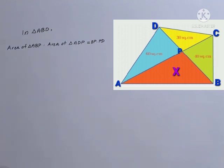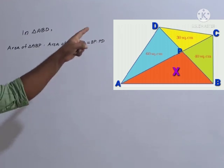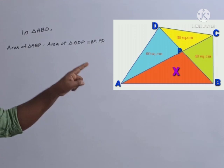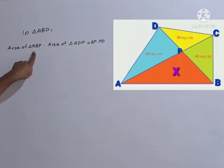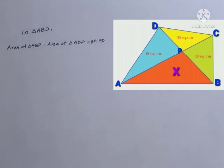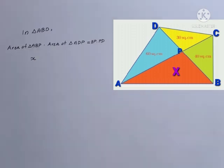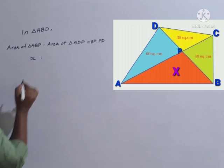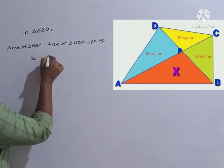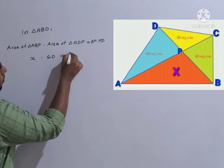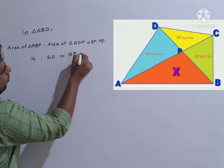So: area of triangle ABP to area of triangle ADP equals BP to PD. Let the unknown area be x. Then x is to 60 equals BP to PD. This gives us equation one.